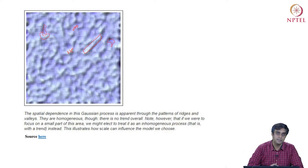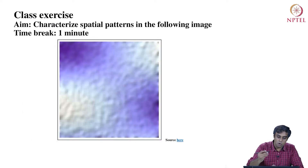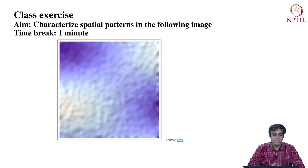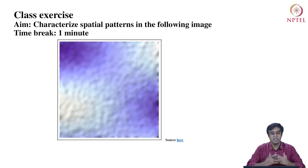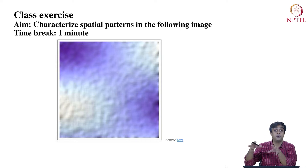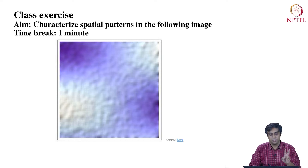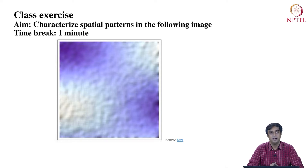That is the fundamental understanding of spatial dependence. Now, as a class exercise, I'm going to give you one minute. Look at the image on your screen and characterize the spatial patterns in it, specifically through the lens of spatial heterogeneity — do you see any trends? — and spatial dependence. We only have two tools: spatial dependence and spatial heterogeneity. We will come back in one minute and solve the problem together.